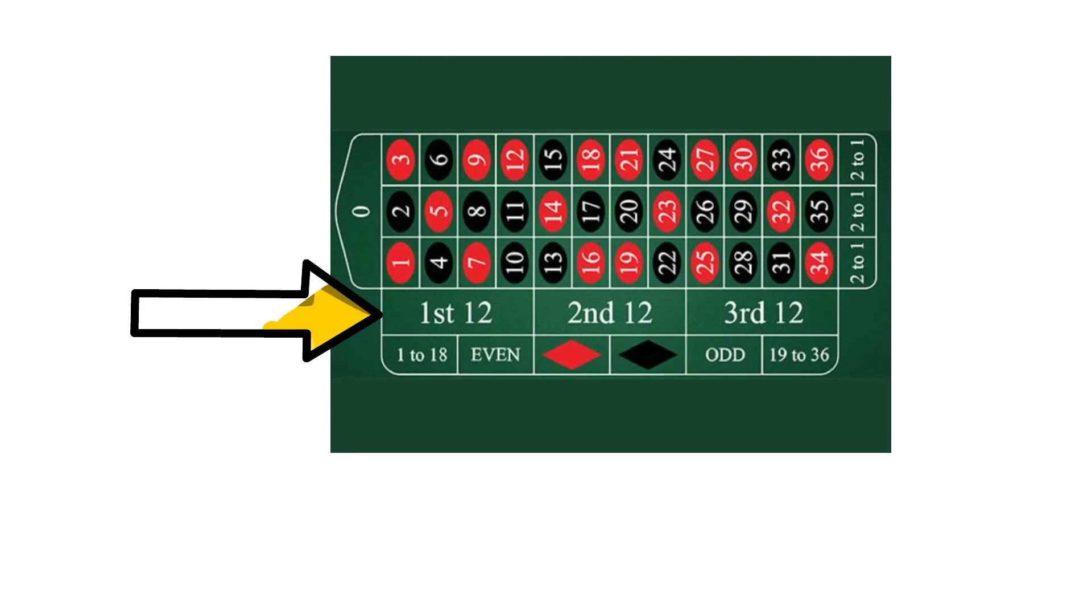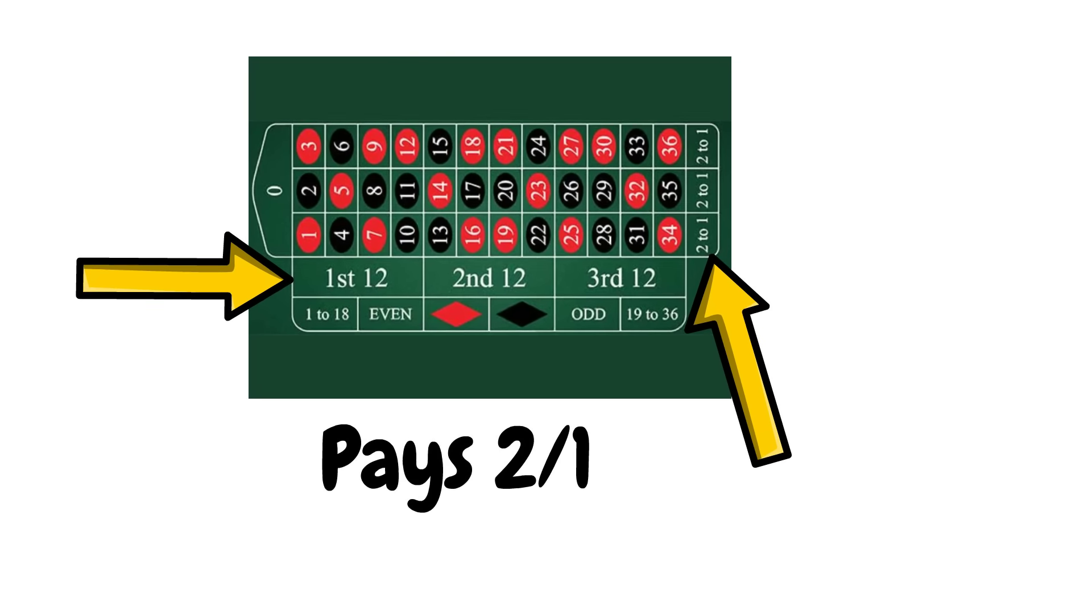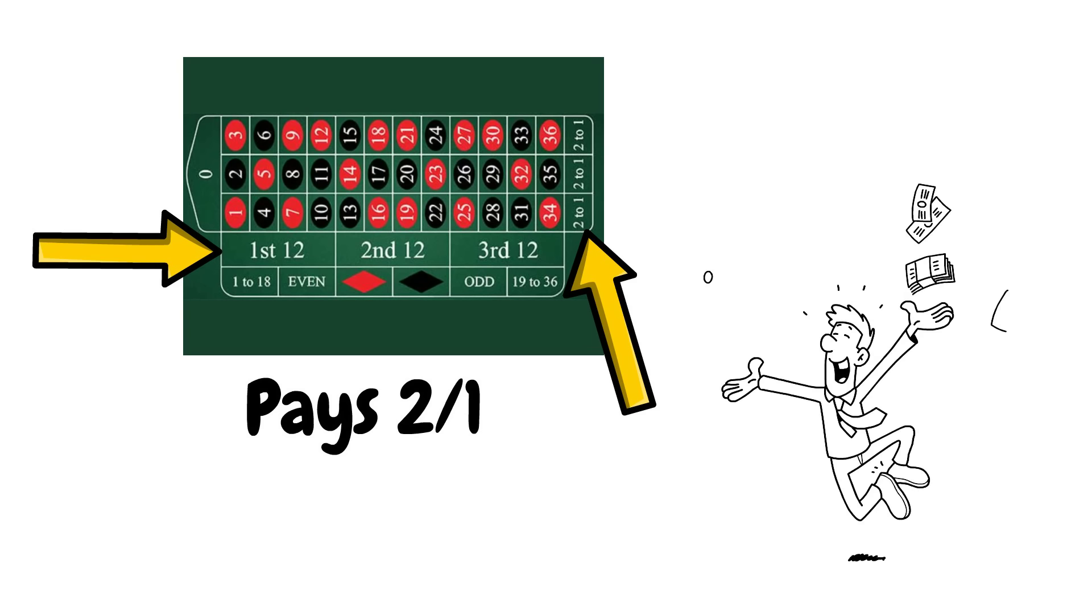In that video, I suggest betting on either the dozens or columns because they have a 2 to 1 payout, which allows you to make a profit when you eventually hit a winning bet whilst following the Fibonacci progression.